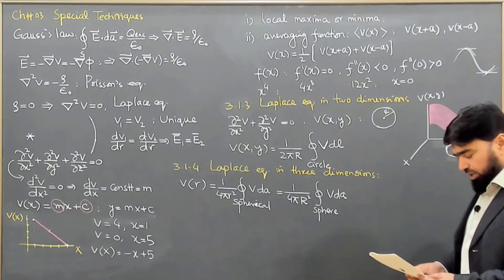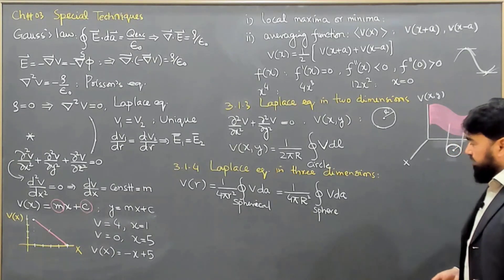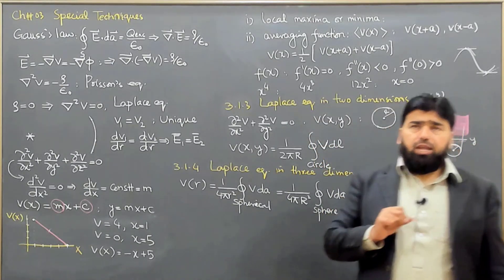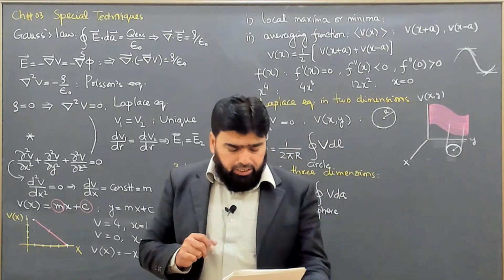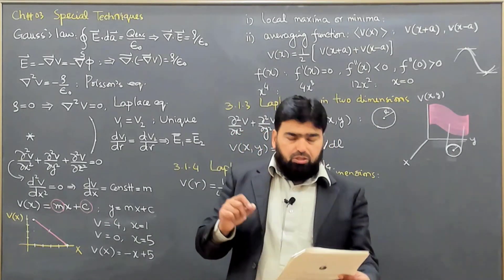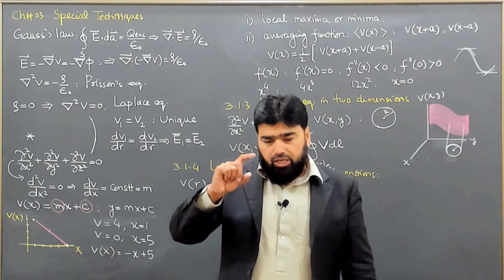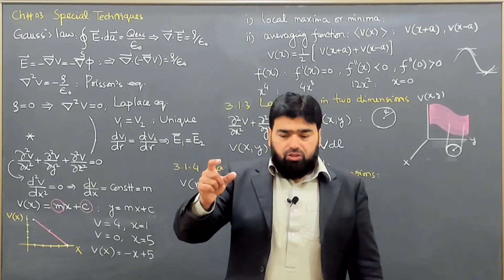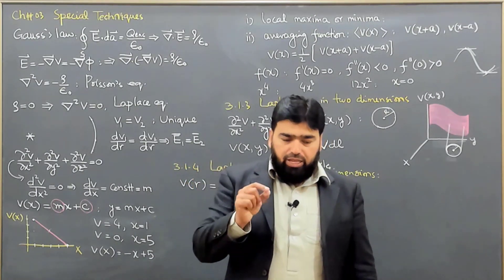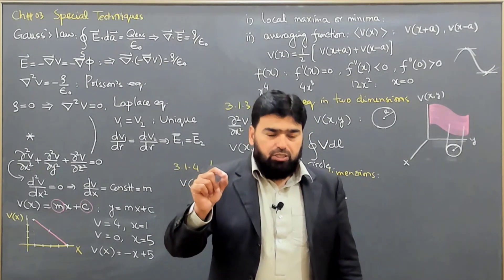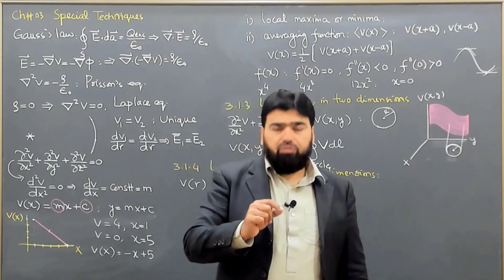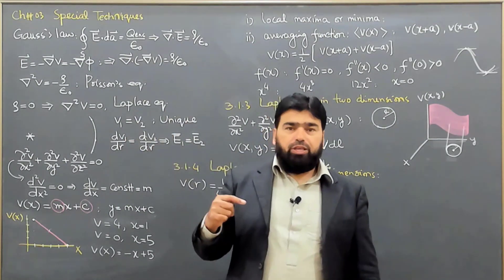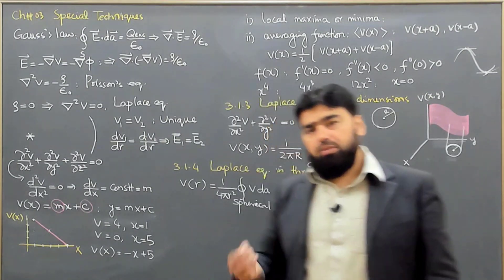Consider a sphere where the extreme values are not on the boundaries — not on the edges — but somewhere else. Then the average value will shift from the center toward that point, or away from it, depending on whether there is a dip or a peak there — a maxima or minima.